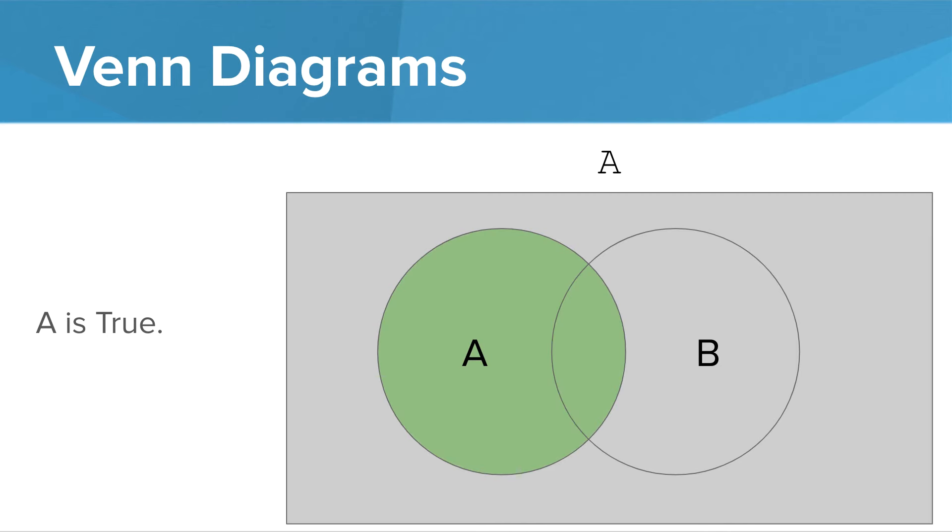This region represents A being true. In order for the expression on top to evaluate to true, the dart must have landed somewhere in circle A. Note that the dart may have landed in circle B or may not have.